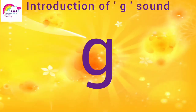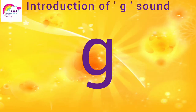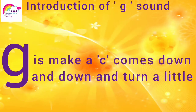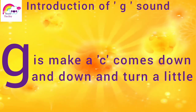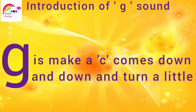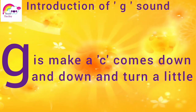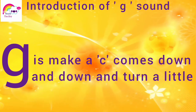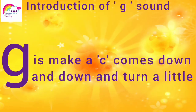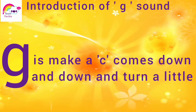Now let us learn the formation rhyme of G sound. G: make a Khar, comes down and down and turn a little. G: make a Khar, comes down and down and turn a little.